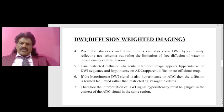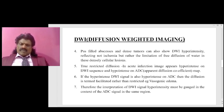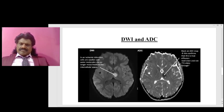True restricted diffusion in acute infarction: the image appears hyperintense on DWI and hypointense on the ADC map. If the hyperintense DWI signal is also hyperintense on ADC, then the diffusion is termed facilitated rather than restricted — for example, vasogenic edema. Therefore, interpretation of DWI signal hyperintensity must be made in the context of the ADC signal in the same region. Infarction appears bright on DWI and dark on ADC.